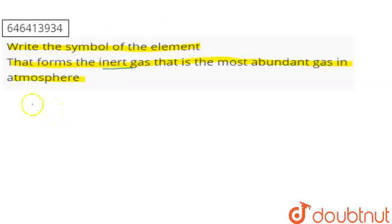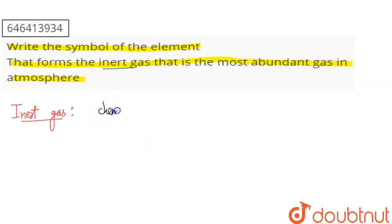So, what is an inert gas? Inert gases are basically gases that are chemically unreactive. Those are said to be inert gases.